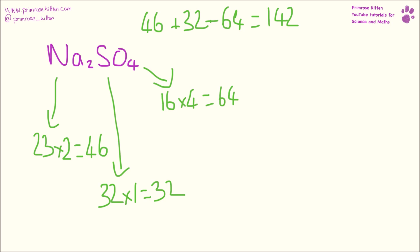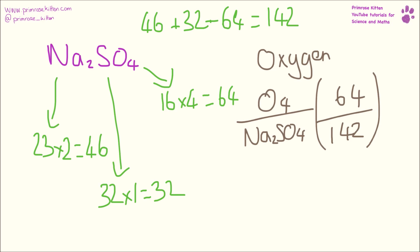If we wanted to work out the total mass of oxygen in this, we would need to do the total mass of oxygen divided by the total. So that would be 64 divided by 142 times 100 will give us 45%.